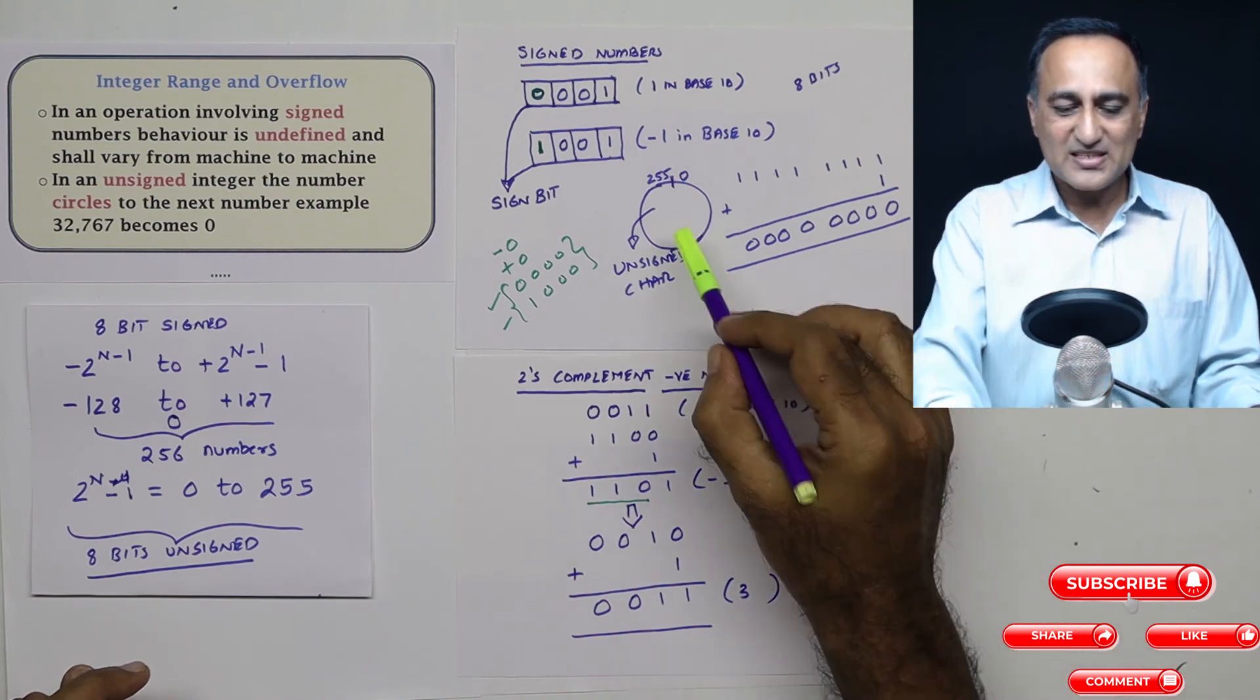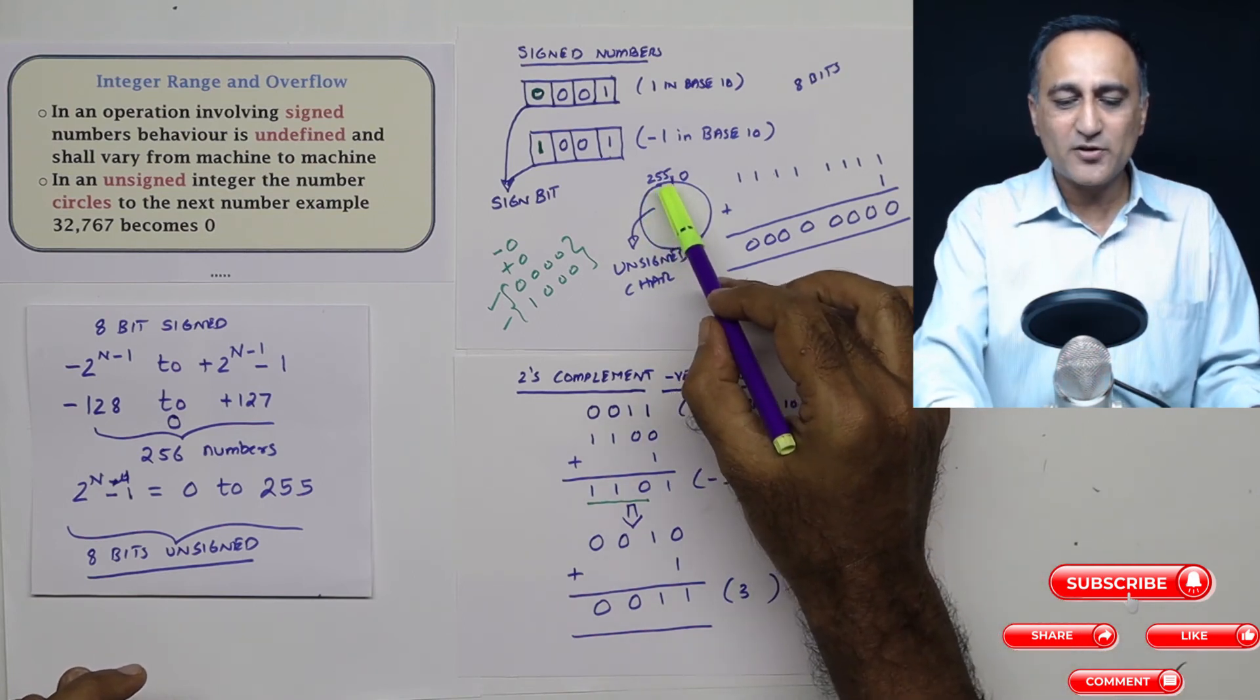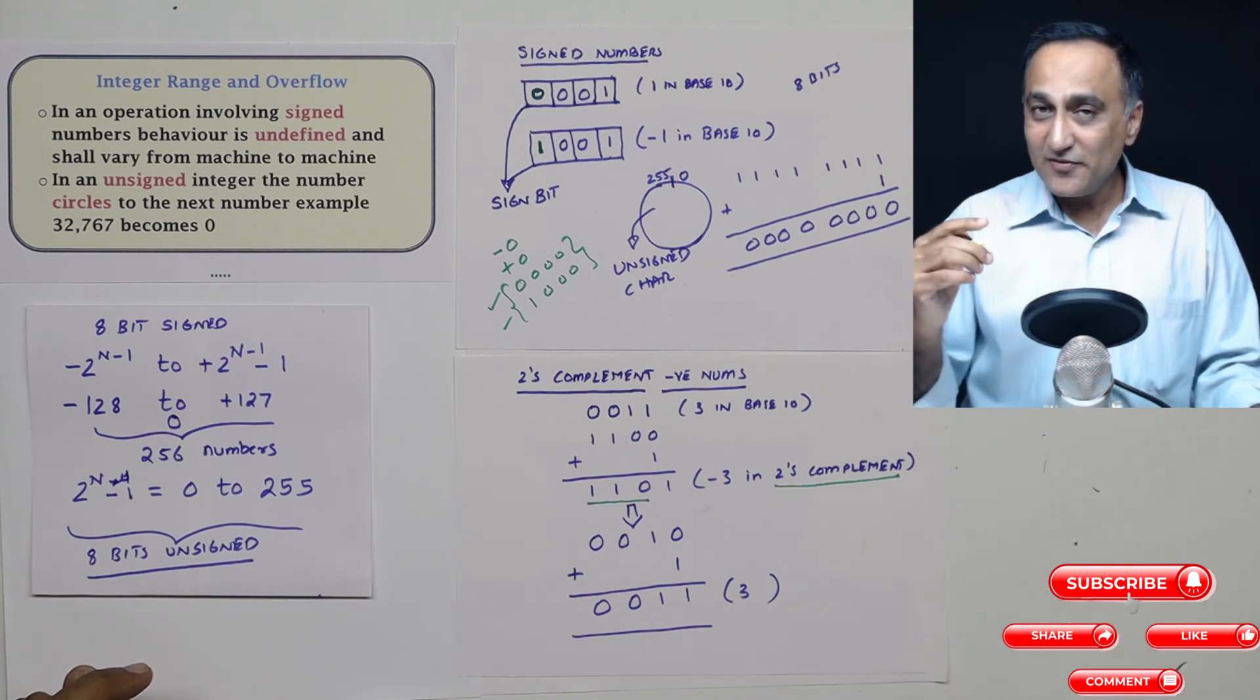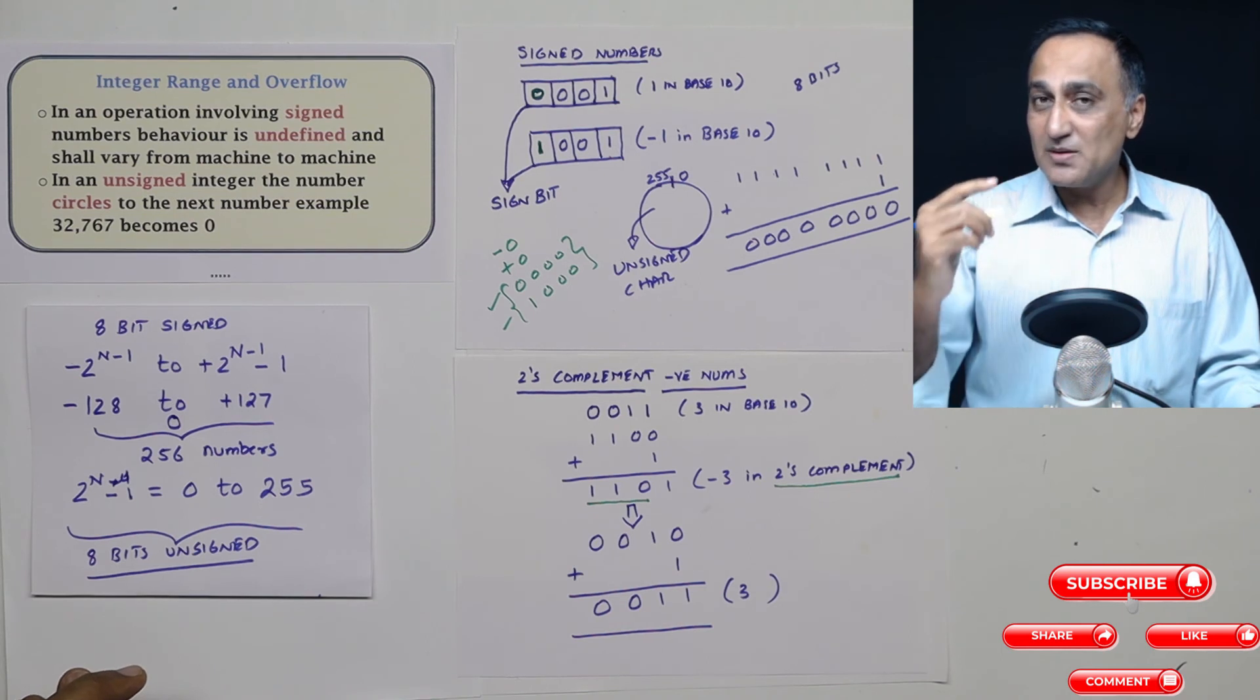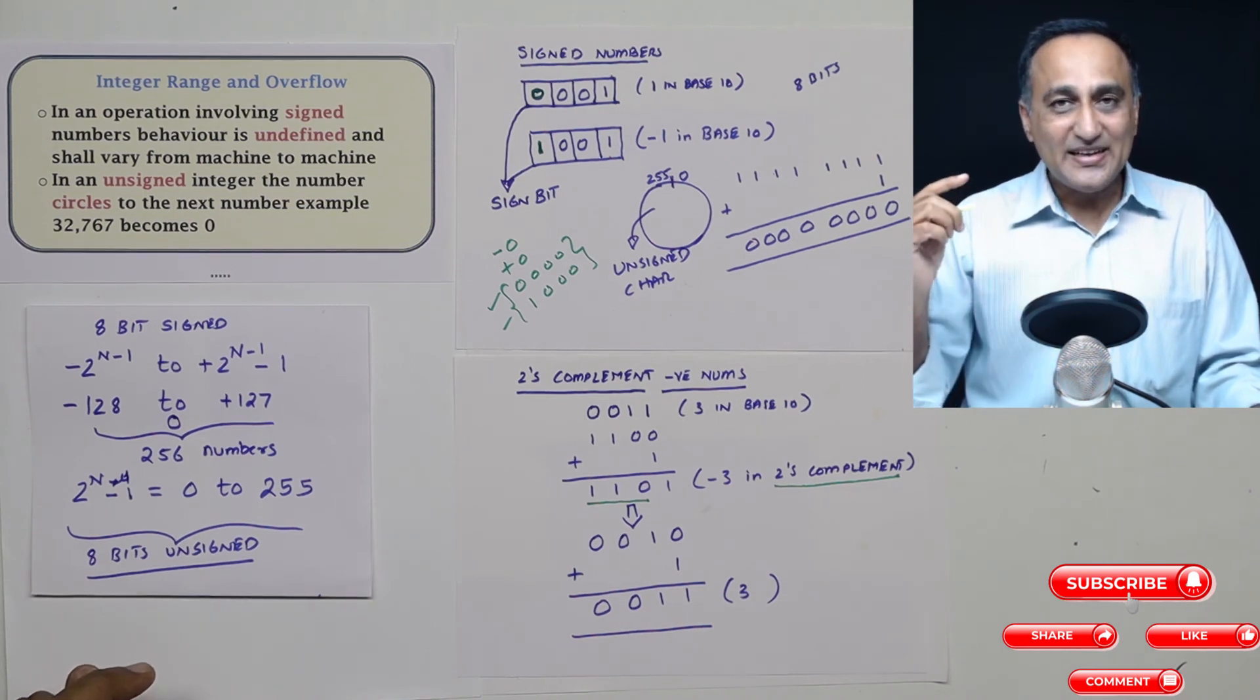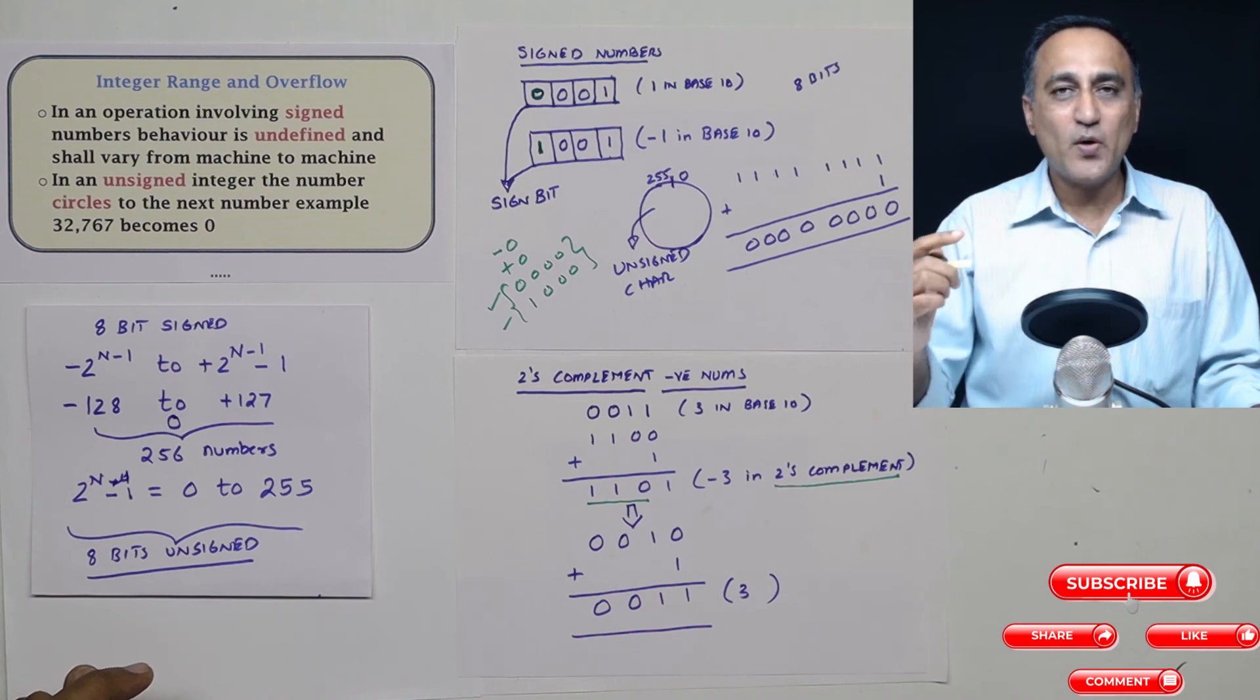The moral of the story is unsigned integer, no problem. If you push it after 255 or the maximum limit by one, it will become zero. But for signed, if you push it on some machines it may become zero, some machines it may become something else. So with signed integers, be very careful how you handle the overflow.